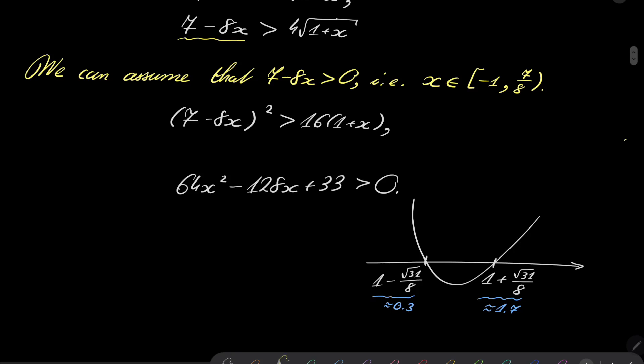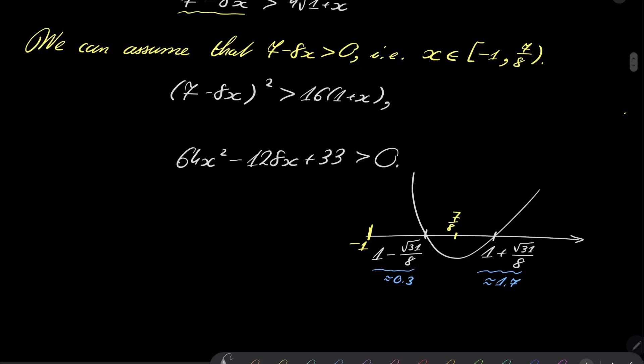And our interval from minus 1, let's say that minus 1 is something somewhere like there, 7 over 8 is right there, so after intersecting, we will have our solution set.